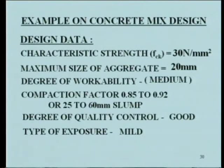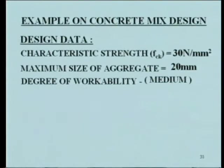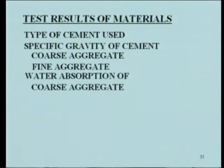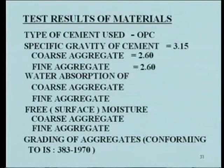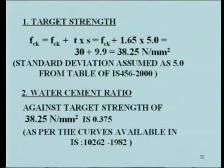Finally, the actual quantities of water to be added are calculated after making corrections for water absorption by aggregates and free moisture present in the aggregate. An example on concrete mix design: design data includes characteristic strength fck = 30 N/mm², maximum size of aggregate 20 mm, degree of workability medium with compaction factor 0.85 to 0.92 or 25 to 75 mm slump, degree of quality control good, and type of exposure mild. Test results: cement type OPC, specific gravity of cement 3.15, specific gravity of coarse and fine aggregate 2.6, water absorption of coarse aggregate 0.5% and fine aggregate 1%, and free surface moisture of coarse aggregate 1% and fine aggregate 2%.